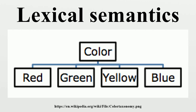Semantic networks: lexical semantics also explores whether the meaning of a lexical unit is established by looking at its neighborhood in the semantic net, or whether the meaning is already locally contained in the lexical unit. In English, WordNet is an example of a semantic network. It contains English words that are grouped into syn-sets. Some semantic relations between these syn-sets are meronymy, hyponymy, synonymy and antonymy.